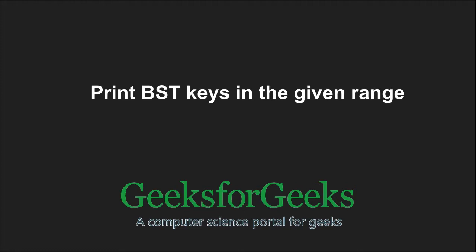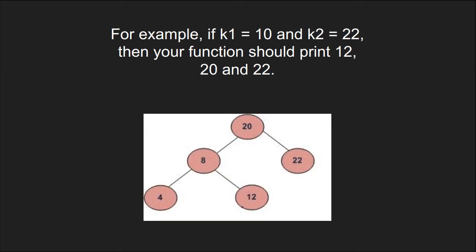First, let us take an example. For example, if k1 is equal to 10 and k2 is equal to 22, then the function should print 12, 20 and 22 in the given binary tree.